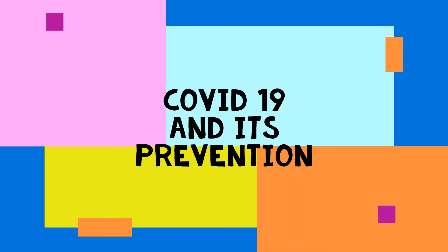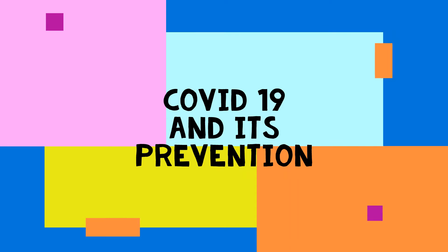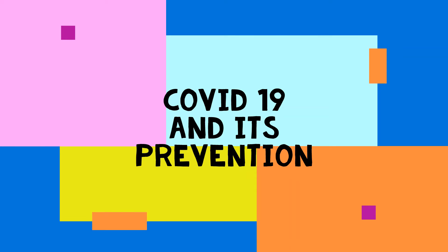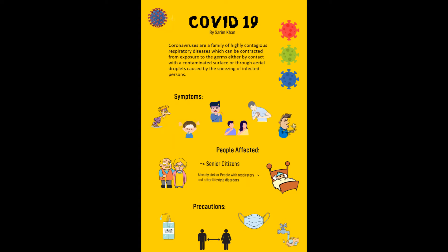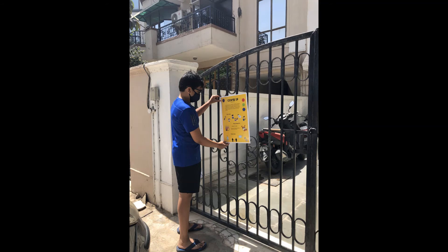For my services action, I chose to spread awareness on the coronavirus. My project, COVID-19 and its prevention, aimed to spread awareness about the disease, its symptoms, and the precautions we can take to stop its spread. This included conducting research about the disease and then creating a poster and website from the information I collated. I also handed out COVID essentials such as masks and anti-germ wipes during my visits.